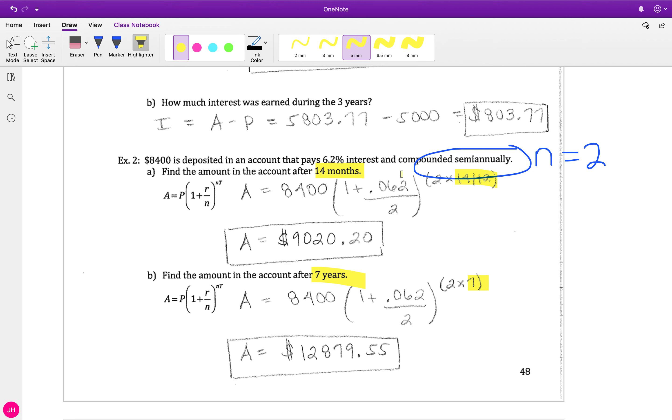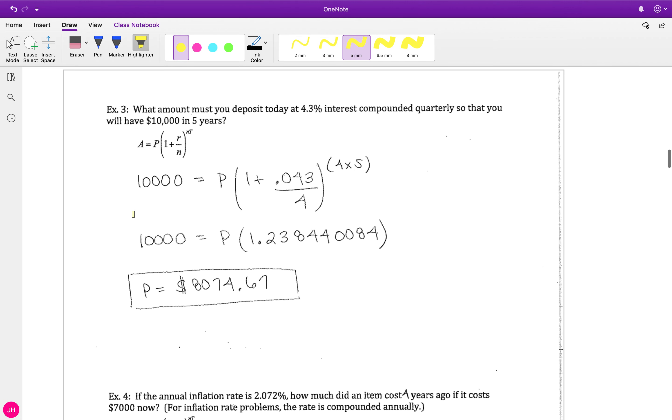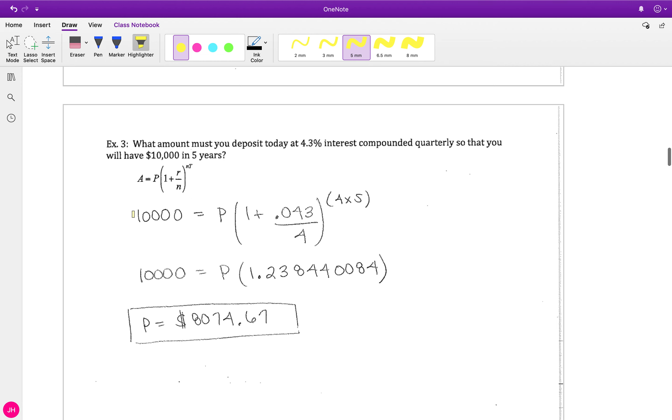Here's another one of these compound interest problems. This one's gonna work slightly different because they want to know how much we must deposit, so that means we are looking for P - we don't know what P is. So I want to do a little bit of algebra on this one.